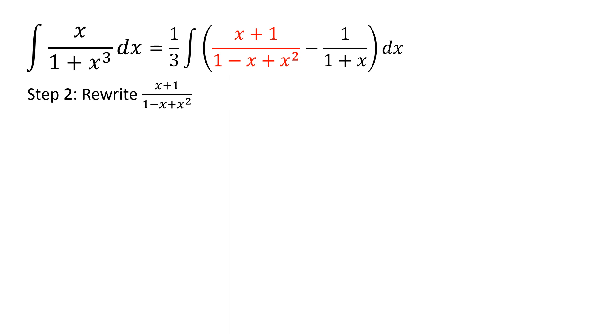The next step is to look at the first fraction, x plus 1 over 1 minus x plus x squared. I can attempt to do this by u substitution. If I did this, u would equal 1 minus x plus x squared and du would equal 2x minus 1. However, I can write x plus 1 is equal to 1 half times 2x minus 1 plus 3 halves.